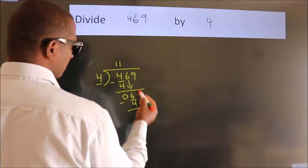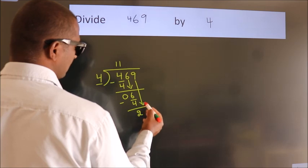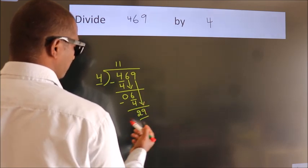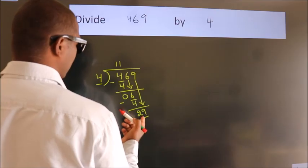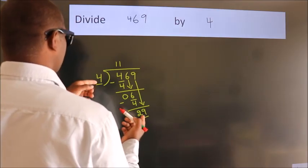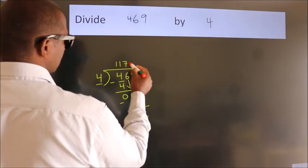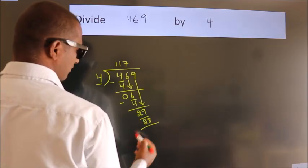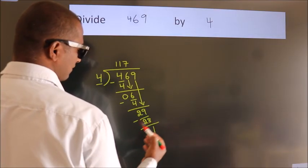After this, bring down the beside number. So 9 down, giving us 29. A number close to 29 in 4 table is 4 sevens, 28. Now we subtract. We get 1.